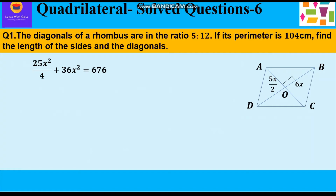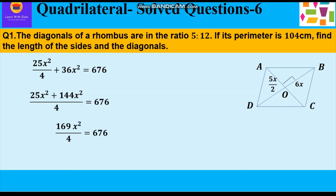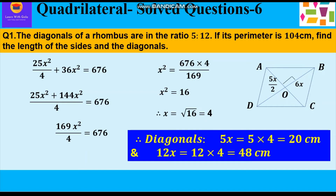Simplifying: 25x²/4 + 36x² = 676. Taking LCM: (25x² + 144x²)/4 = 676. Cross multiplying: x² = 676 × 4 / 169 = 16. So x = √16 = 4. The diagonals are 5x and 12x, so 5 × 4 = 20 cm and 12 × 4 = 48 cm. The side of the rhombus is 26 cm and the diagonals are 20 cm and 48 cm.